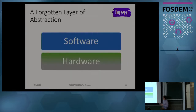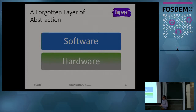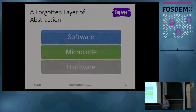If you think about the main levels of abstraction, usually you say we have hardware, the hardware provides the instruction set architecture, and then software runs on top. But actually there is a forgotten layer of abstraction. Historically it was there, but nowadays it's very hidden and typically not used much. That's microcode.